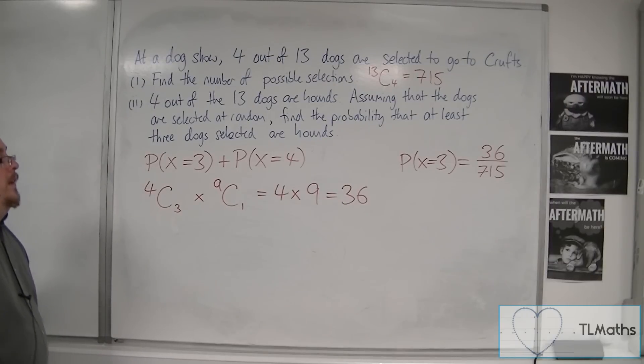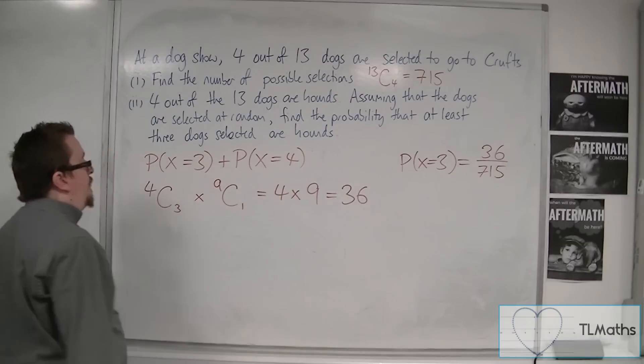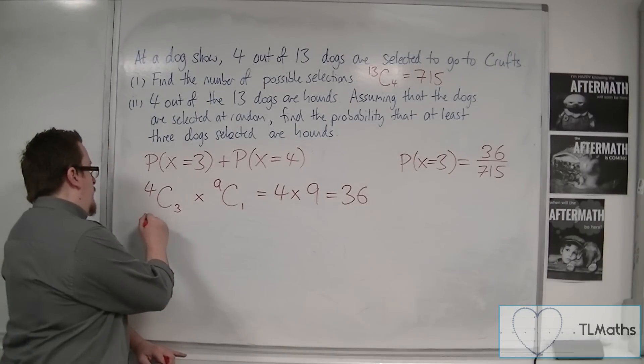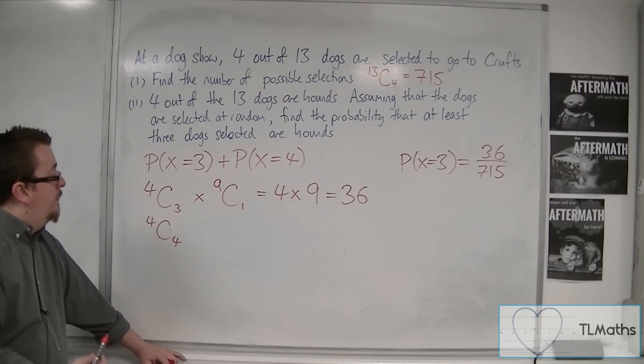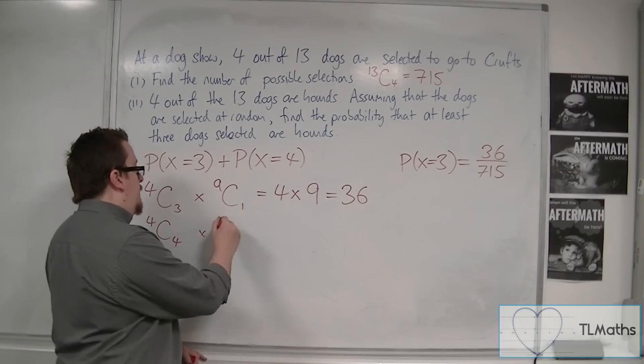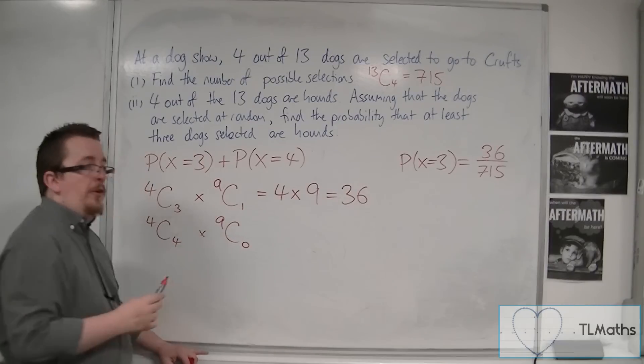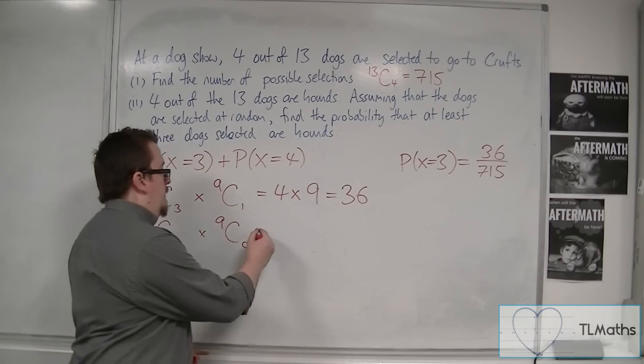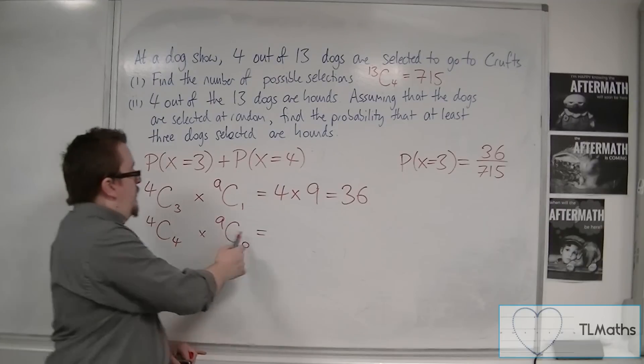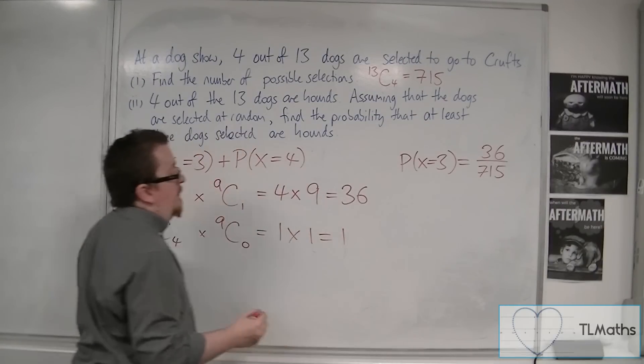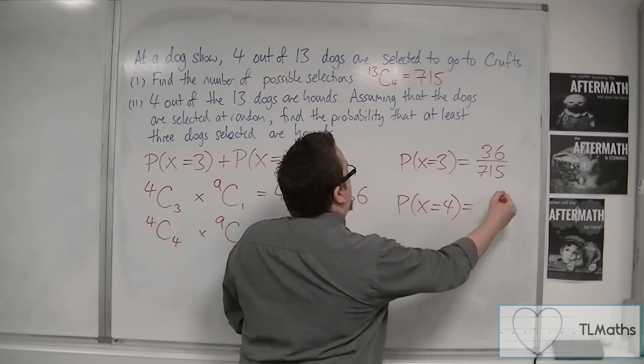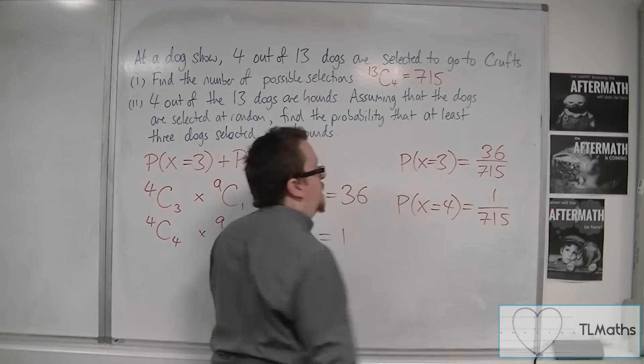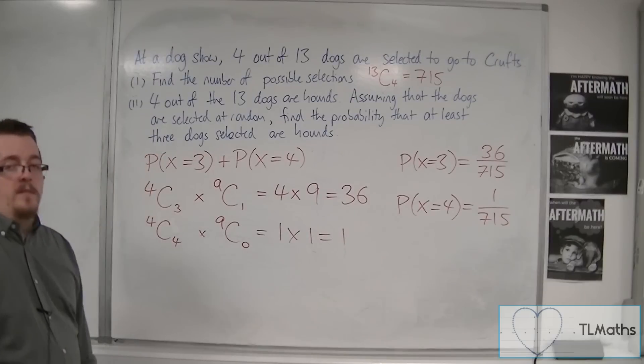We then have the probability of X being equal to 4. So, we need to know 4 NCR 4, because we need to pick the 4 hounds, times, well, I don't want any other dogs to be picked. So, we have 1 times 1, which is just 1. And so, the probability of X being equal to 4 is just 1 out of 715. So, there's just one way that that can potentially happen.